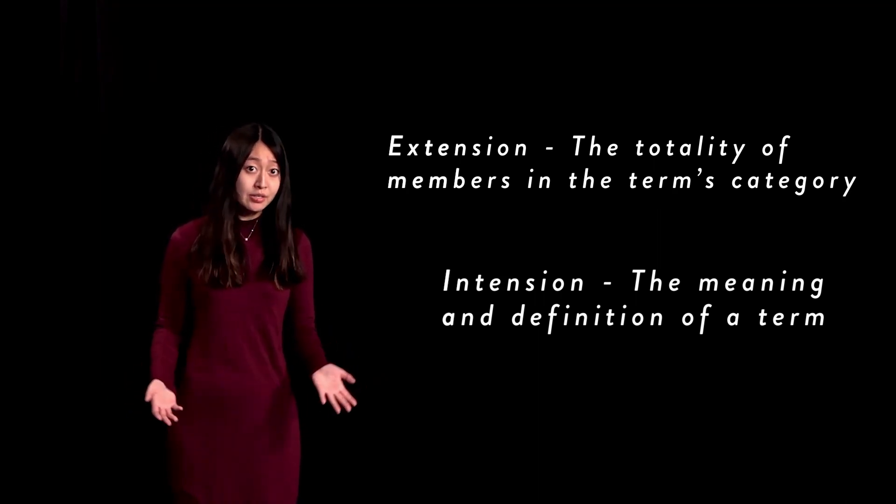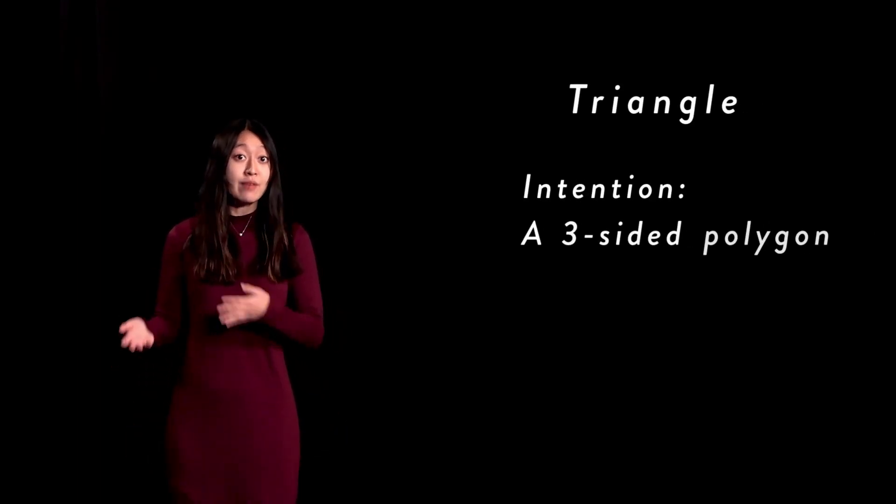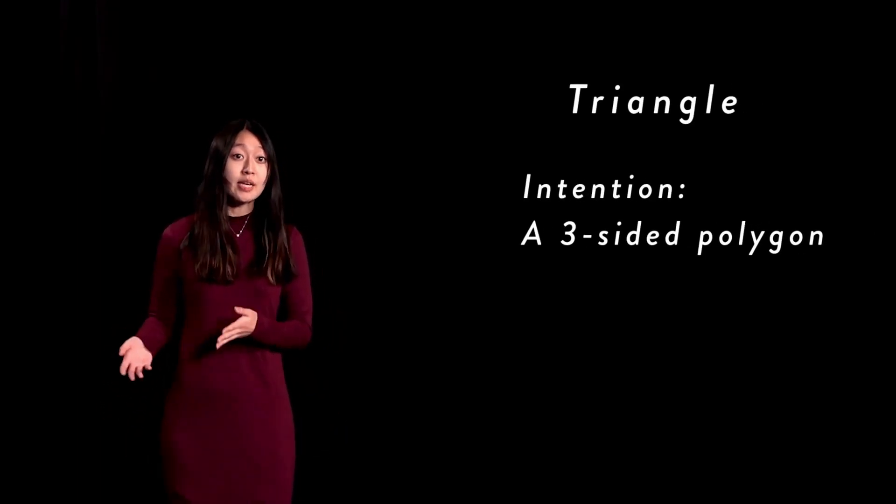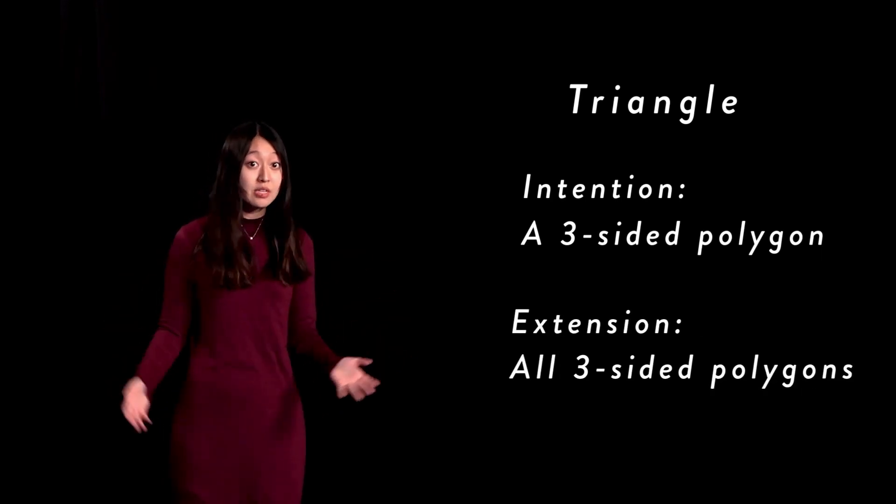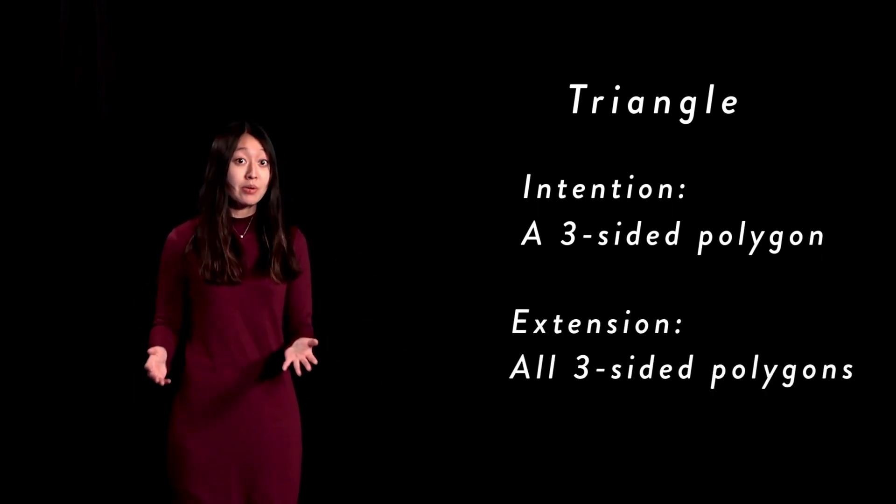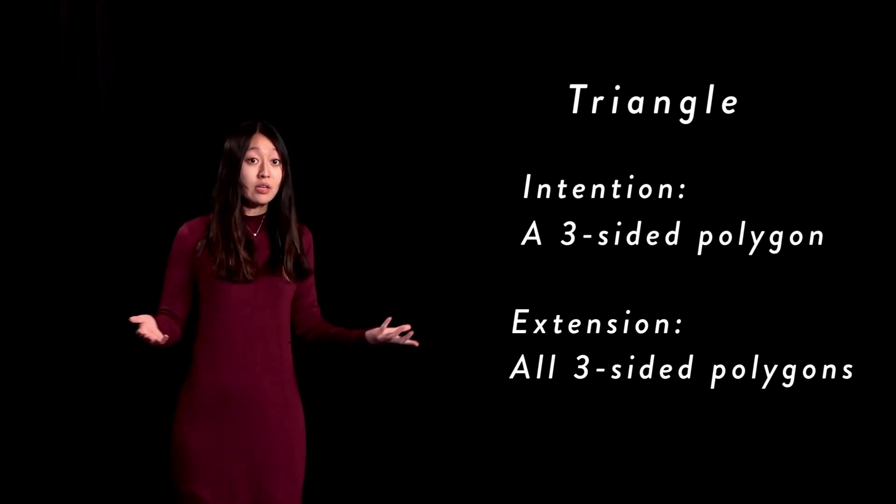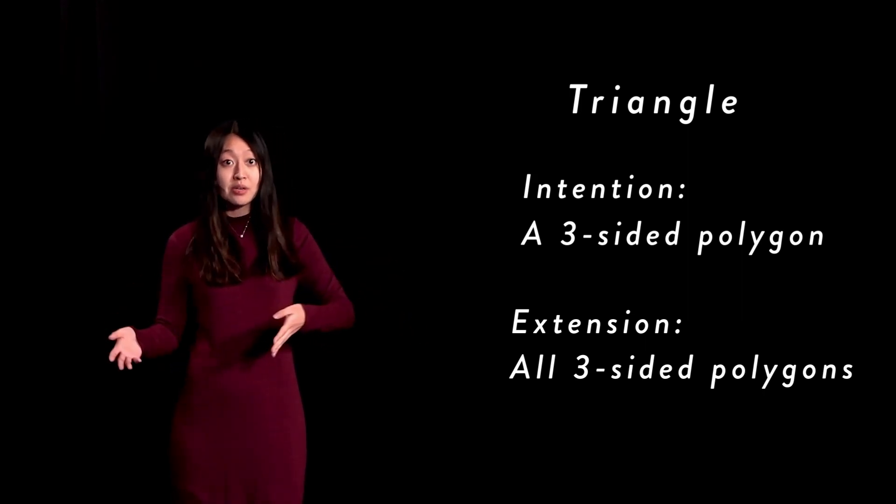Let's use an example to more easily understand these ideas. Let's say that we have the term triangle. The intension or definition of the term triangle is a three-sided polygon. The extension of the term triangle, then, is the totality of things in reality that have the common properties of being both one, three-sided, and two, a polygon: straight sides, closed, and planar.